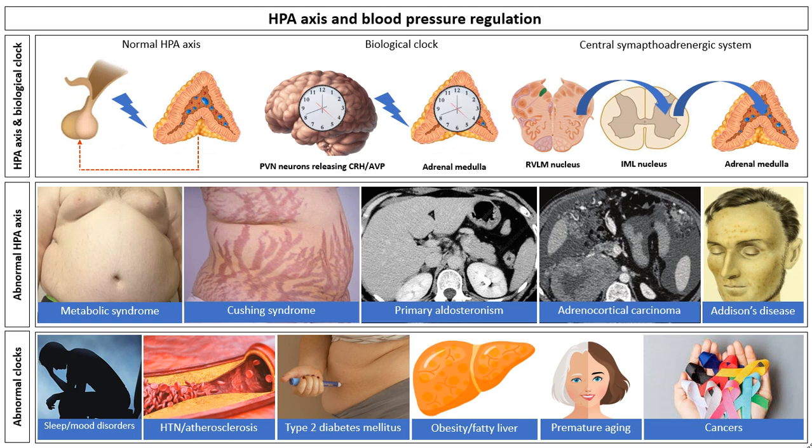Chapter 3 by Johnson Constantine Staticus is another basic science chapter on the hypothalamic pituitary adrenal axis and blood pressure regulation. This chapter discusses the physiological aspects of the HPA axis and the biological clock systems in health and various disease states.